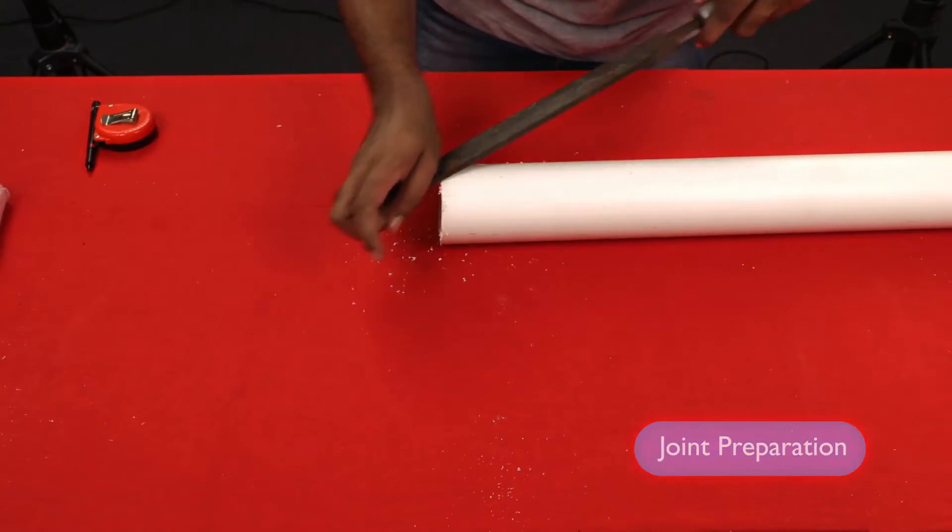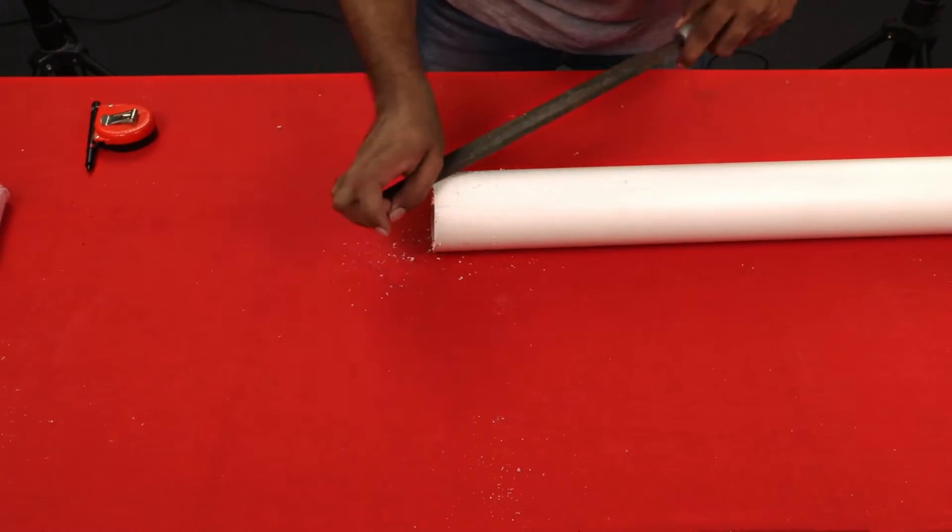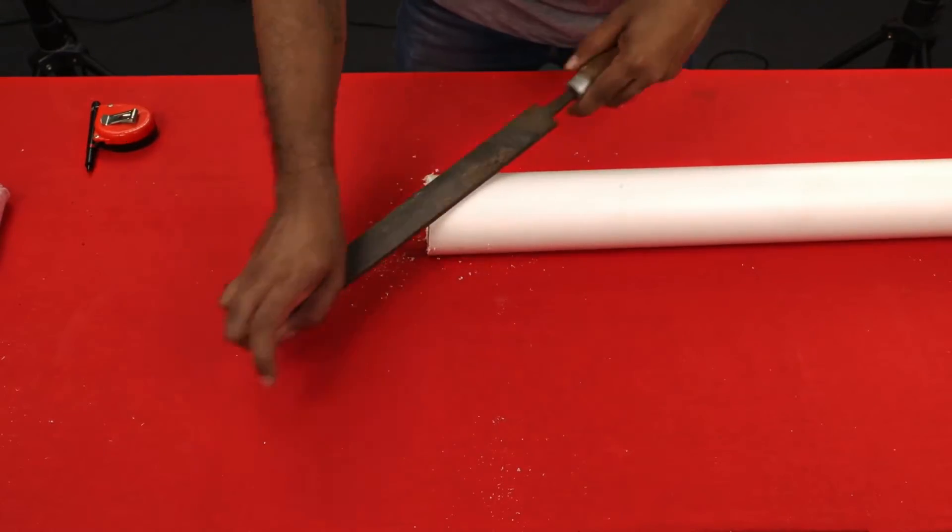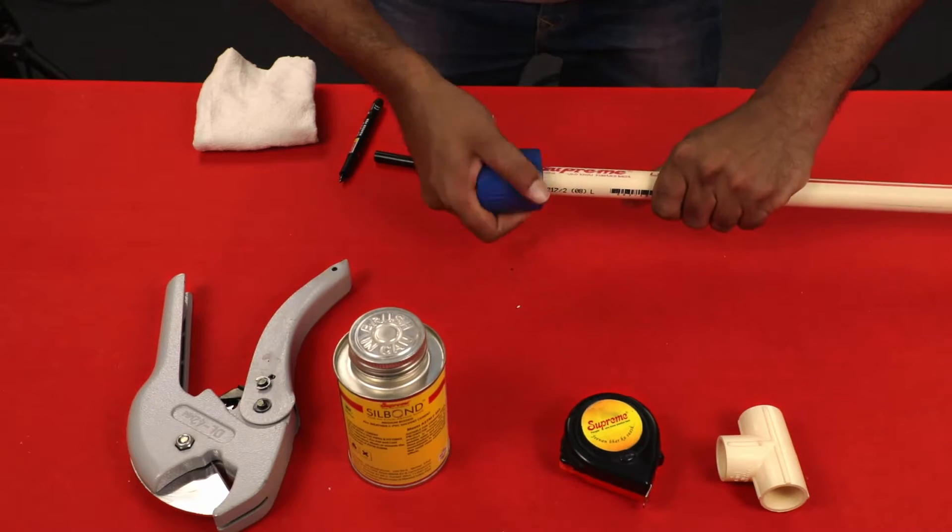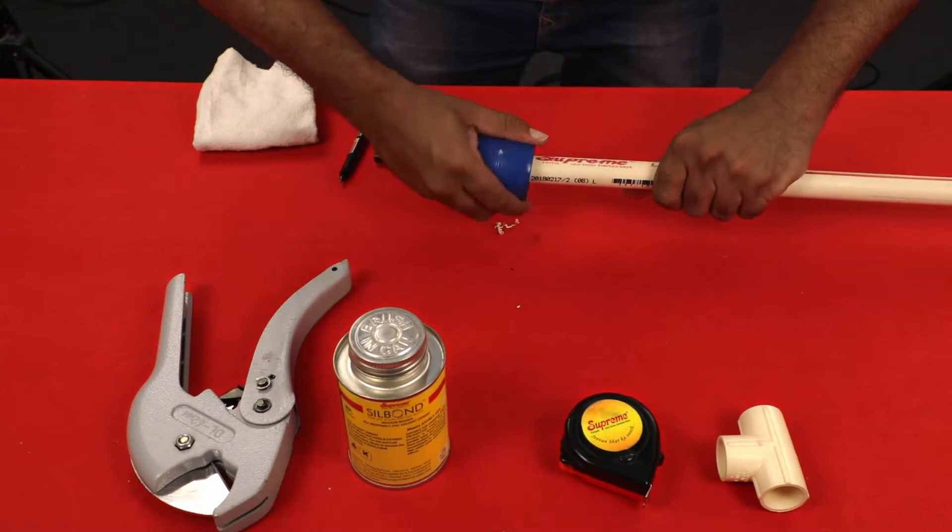Joint Preparation: Chamfer or deburr pipe or both, approximately at 10-15 degree angle. Remove burrs from both inside and outside surfaces.